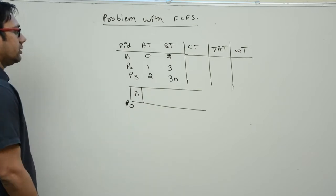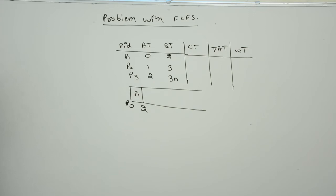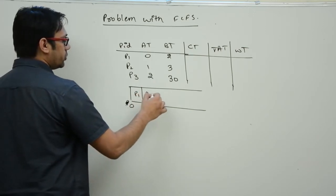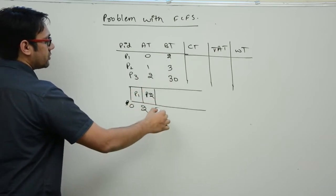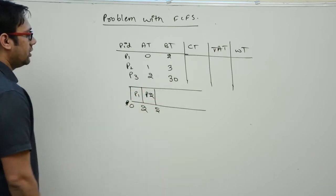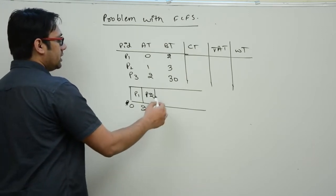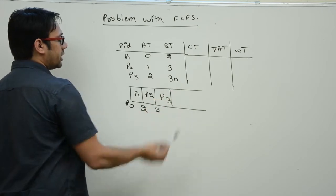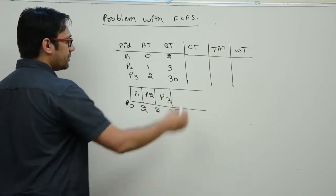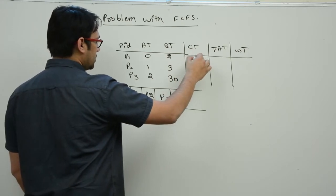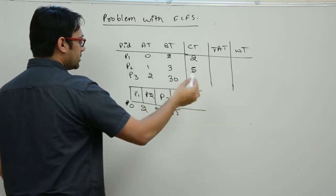The first process P1 arrived at time 0, so we schedule it and it will execute in the CPU for 2 units of time. Then process P2 arrived, so we give the CPU to P2 and it will execute for 3 units of time, finishing at 5 minutes. Then process P3 came and required 30 units of time, finishing at 35. So completion time of P1 is 2, P2 is 5, and P3 is 35.